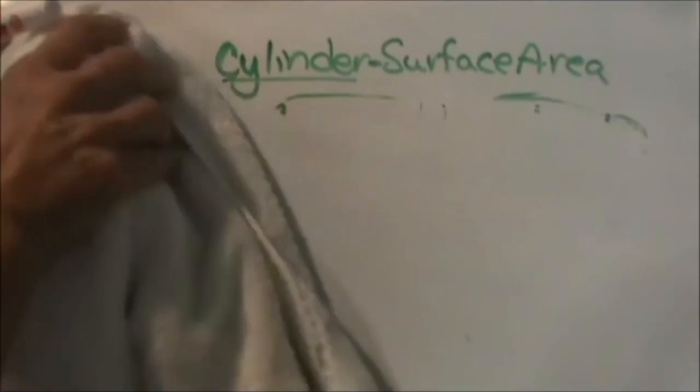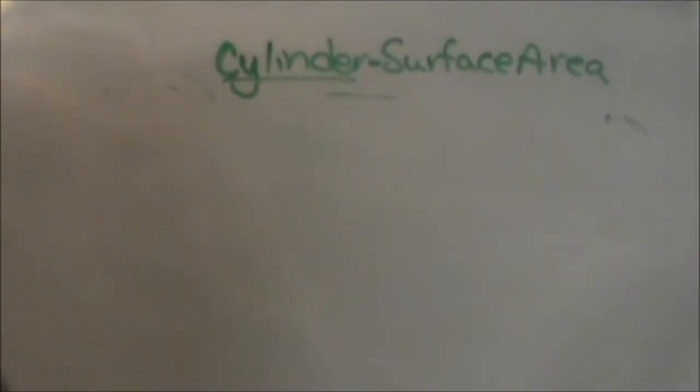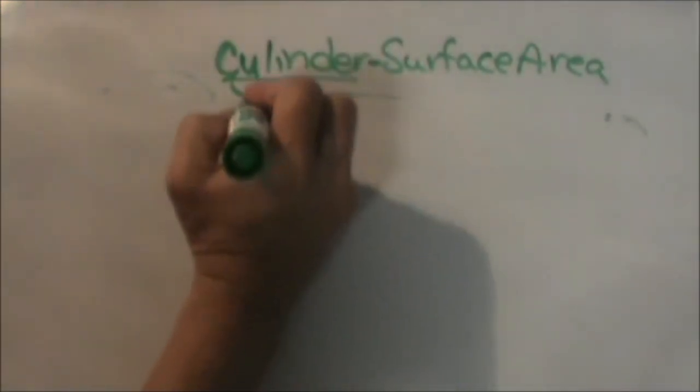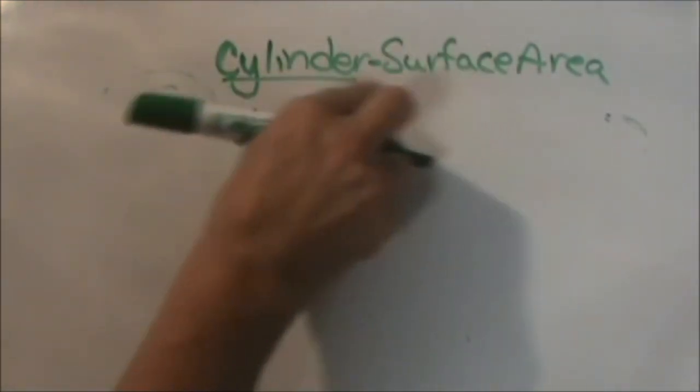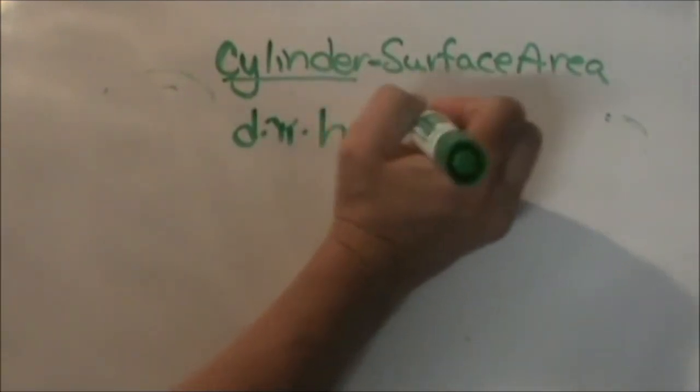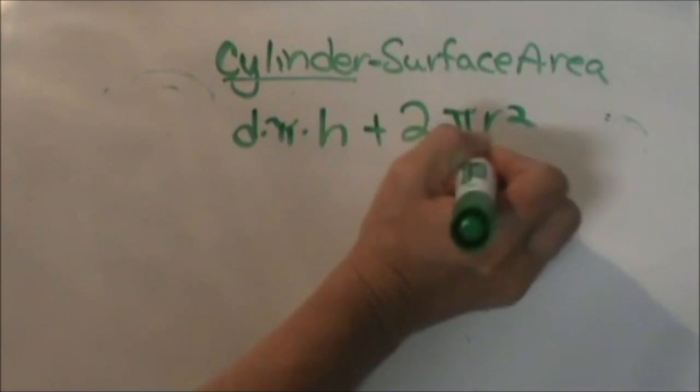So the formula looks like this, it is d times pi times h, which is your lateral area, plus two pi r squared, which are the two bases.